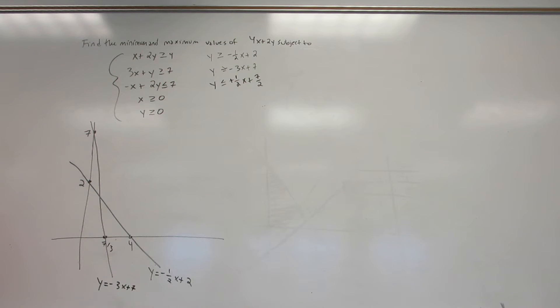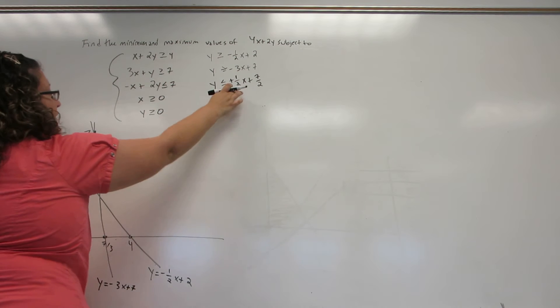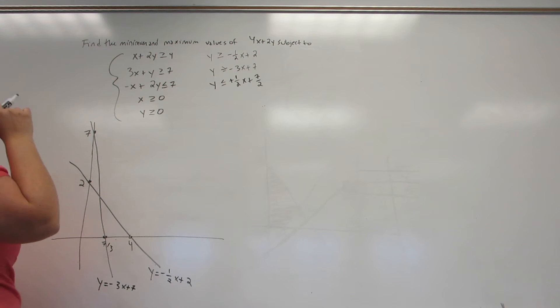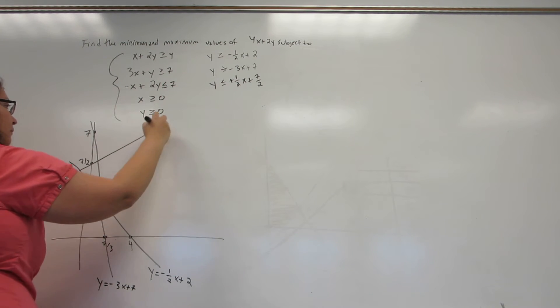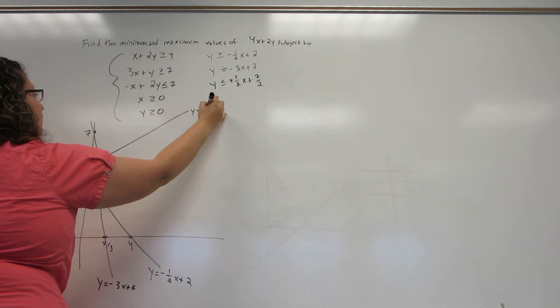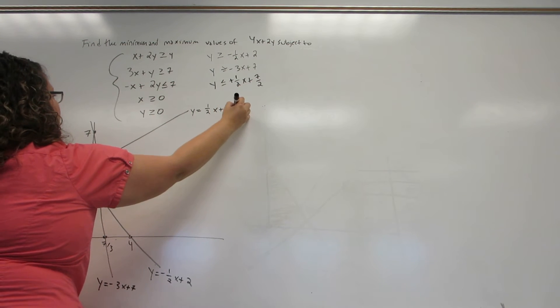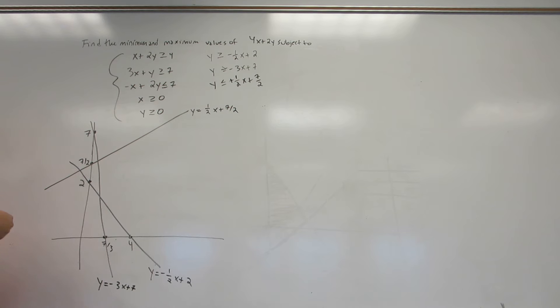Now, our last one is Y equals a half X plus 7 halves, has a Y-intercept of 7 halves, or 3.5, and then it slopes upward. So I have all my graphs.